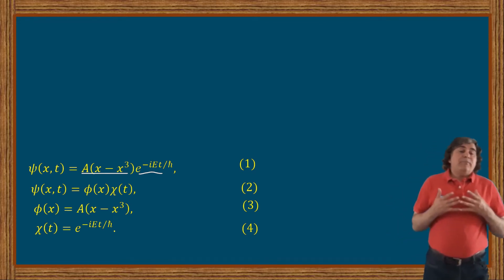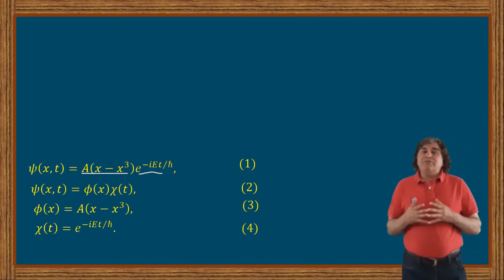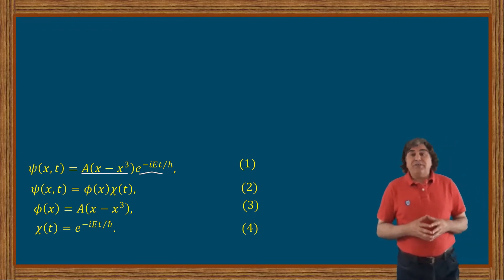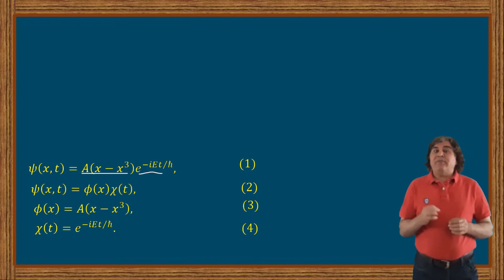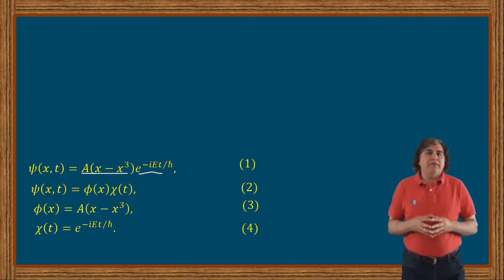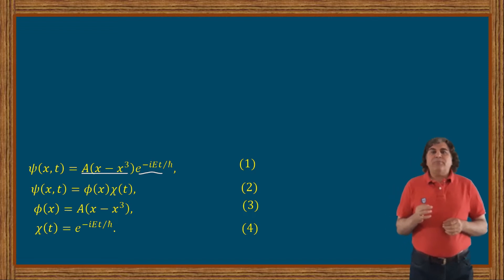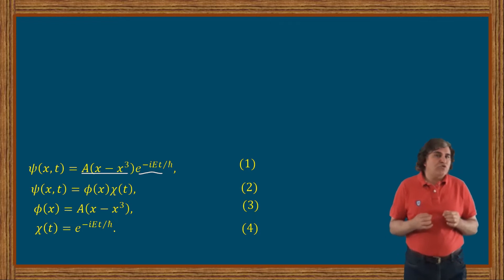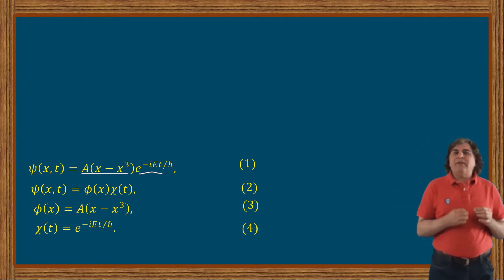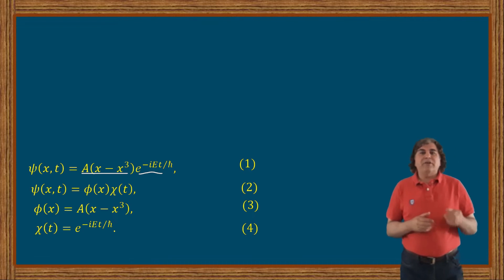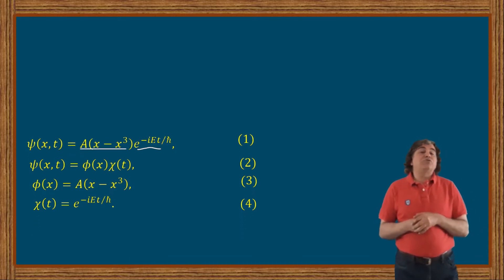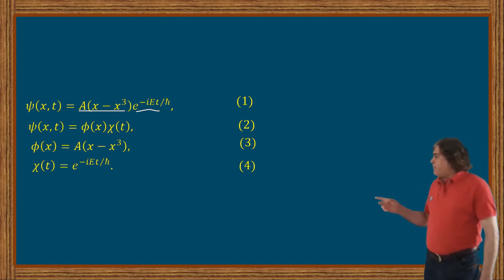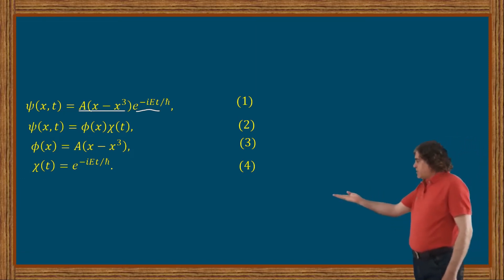We know from the properties of the wave function that the potential for such a factorizable wave function is time-independent. We further know from the properties of the Schrödinger wave equation that for such a wave function we need to solve the time-independent Schrödinger wave equation only for the position-dependent part of the total wave function. In other words, we need to solve the time-independent Schrödinger wave equation given by this relation.